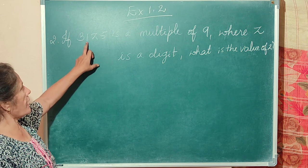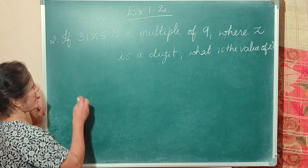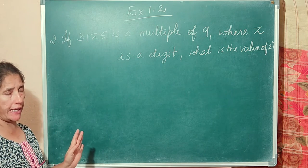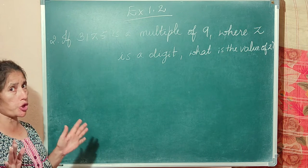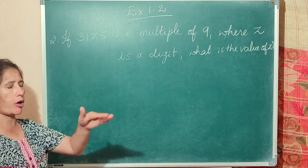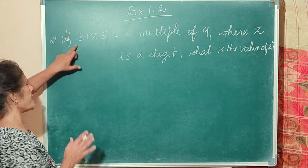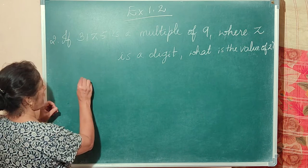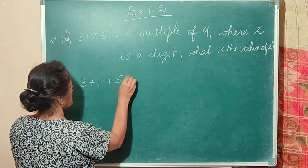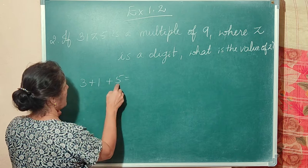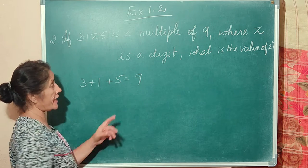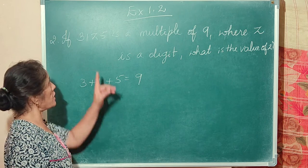Let us add 3, 1, z, 5. Again it is a multiple of 9, so we use the divisibility test for 9: add all the digits. So 3 plus 1 plus 5 equals 9 — already a multiple of 9.